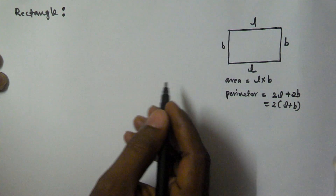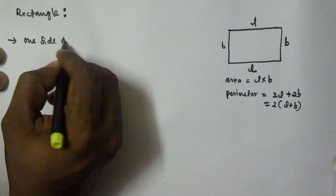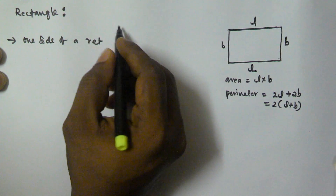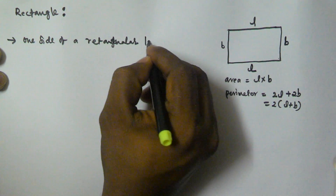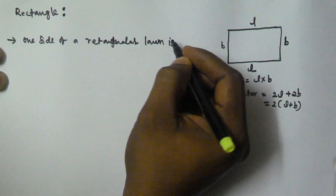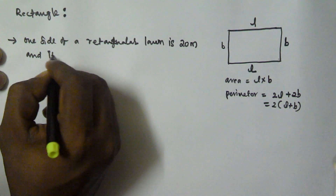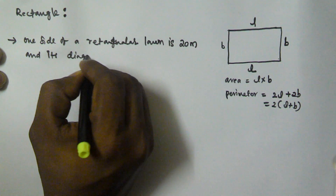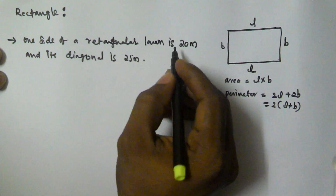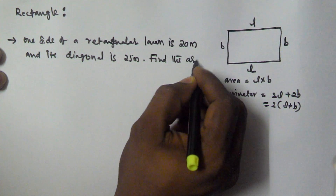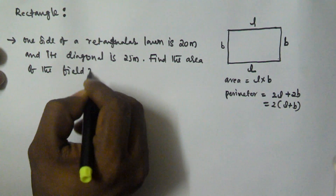Now we will see a problem based on this. One side of a rectangular lawn is 20 meters and its diagonal is 25 meters. Find the area of the field.